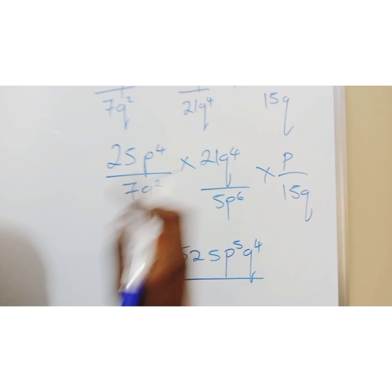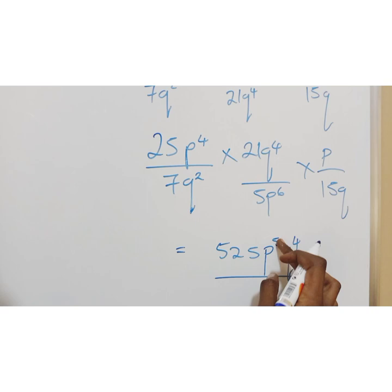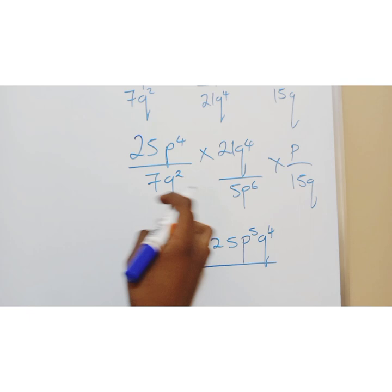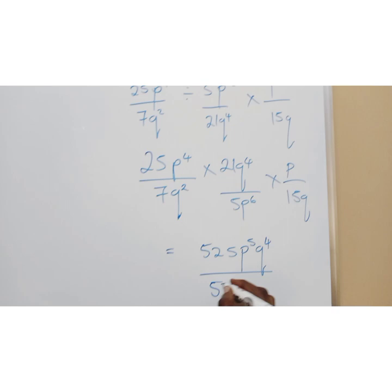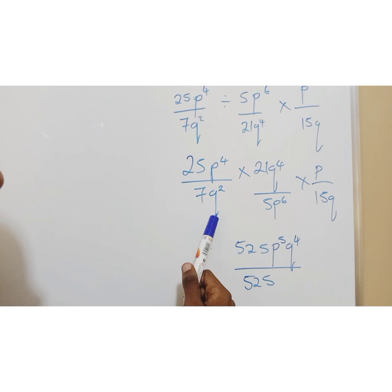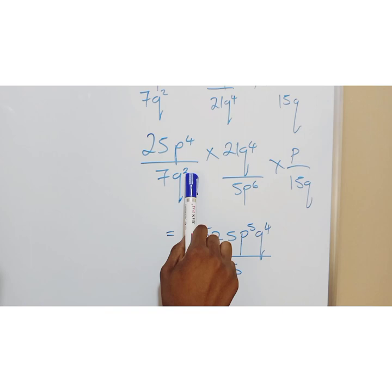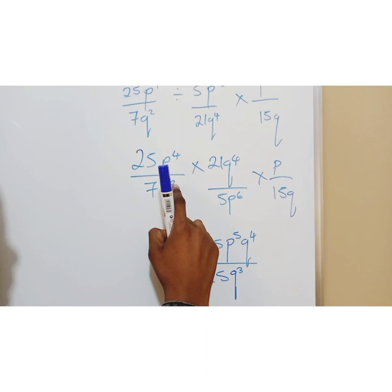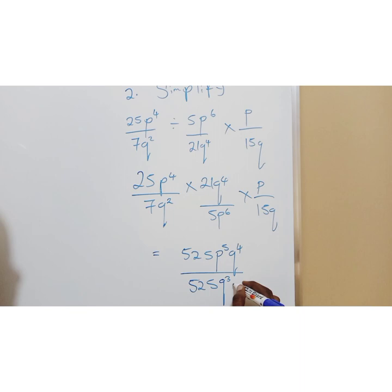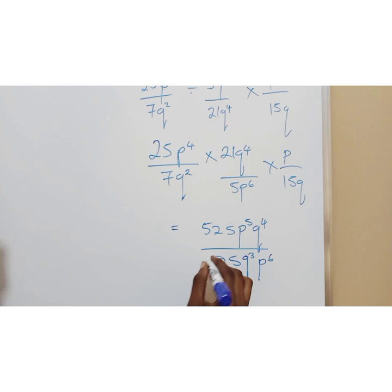Then we go down here. We have 7 times 5 times 15. This will give us 525. You can use a calculator. It's p to the power 2. So now you multiply the letters. This is q squared. And then we have q here. And this is 2 and this is 1. So we have q to the power 3. So when you're multiplying powers, you add. Then you have p6. I'm almost there.